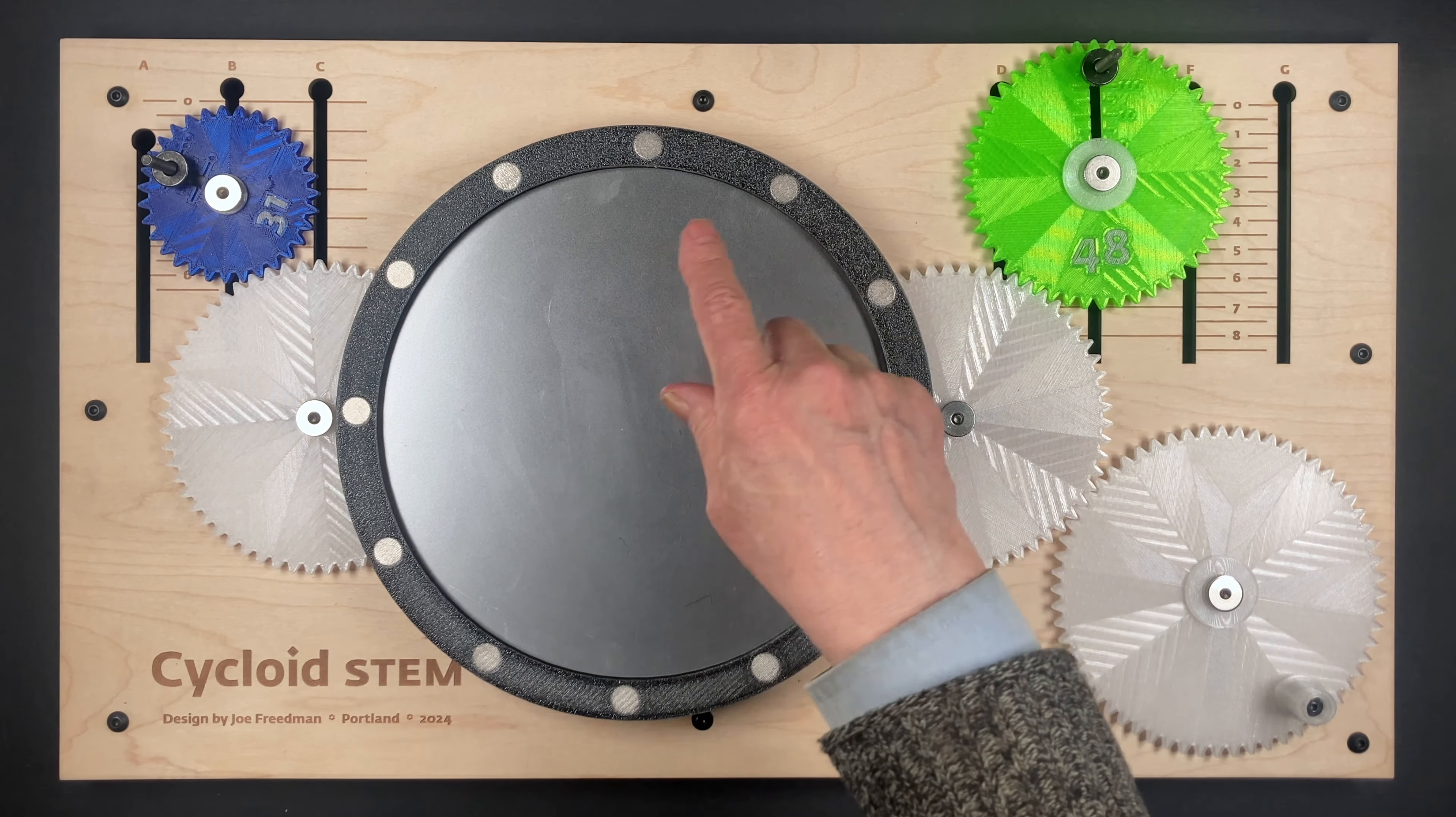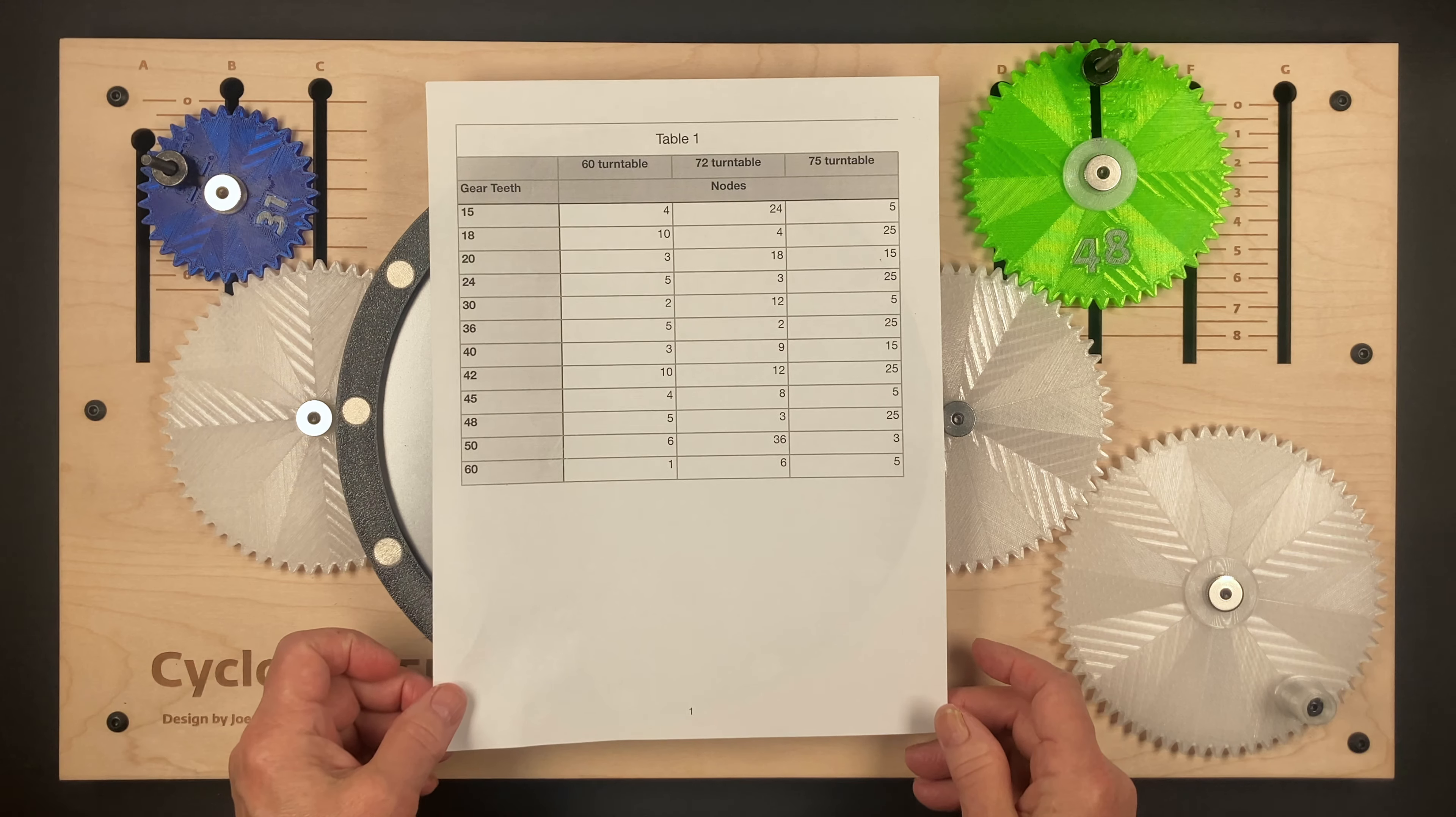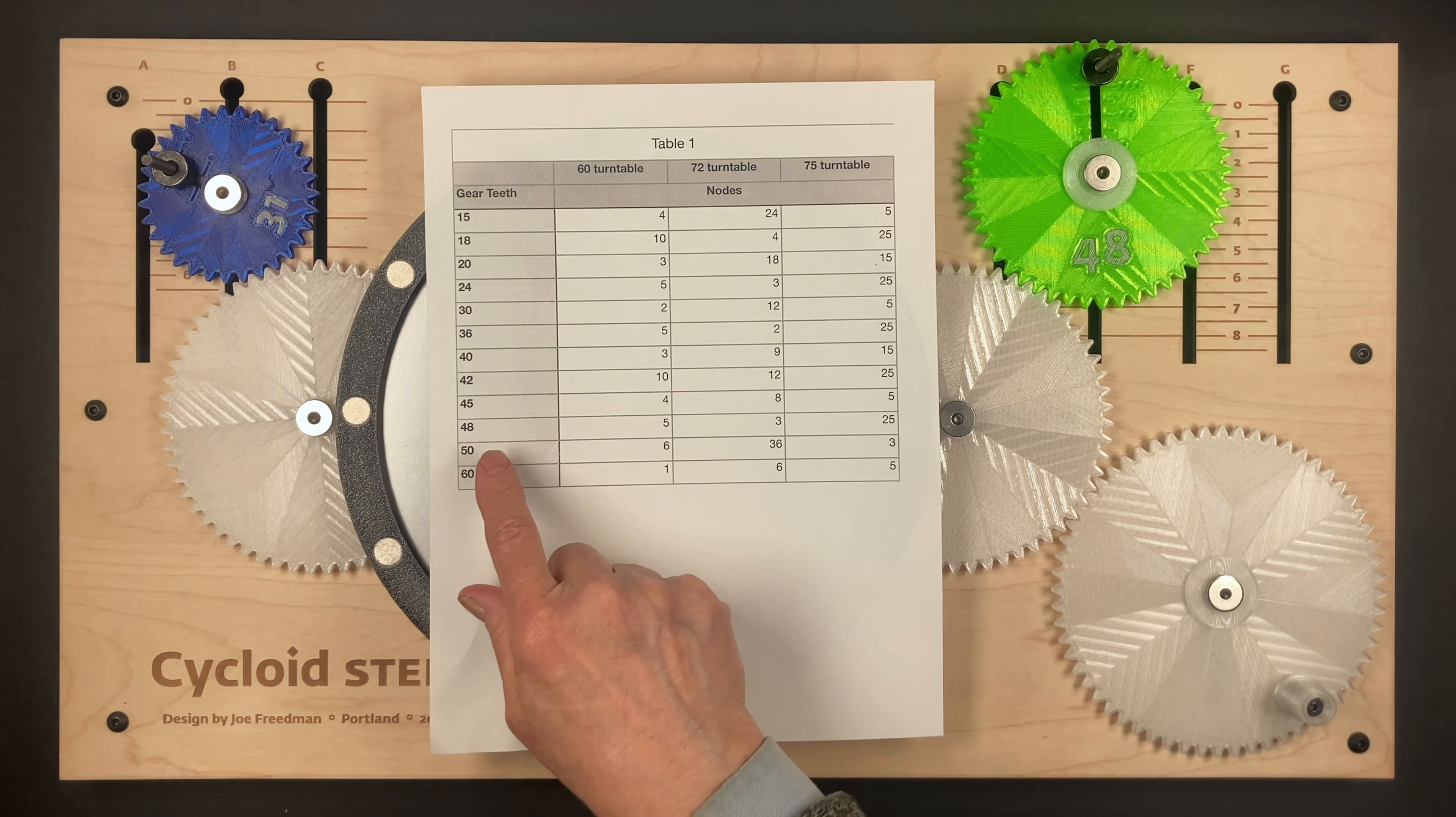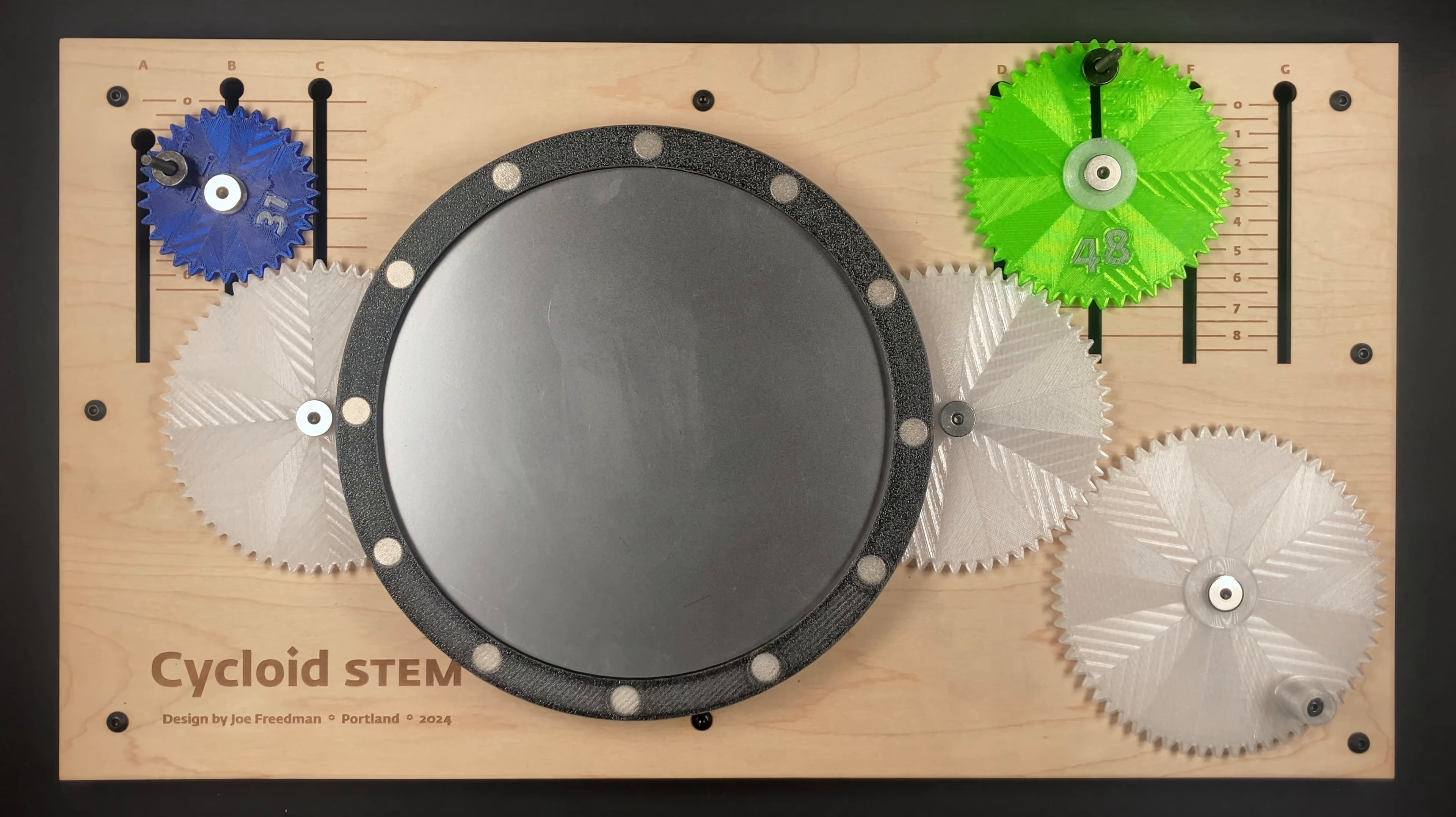So the drawing won't be on top of the same spot as it goes around and around. There's a chart that will show you how many nodes your drawings will be. This is a 60 turntable, so we go down and there's a 48 tooth gear, and that will give us a five node drawing. At this point we're ready to put a piece of paper on.